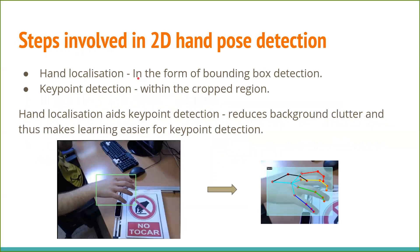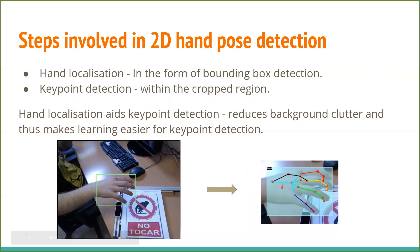The steps involved in this task are hand localization in the form of bounding box detection, and key point detection within the cropped region. Hand localization aids key point detection as it removes background clutter and allows the key point head to focus only on the relevant region of the image, thus making the learning task easier.